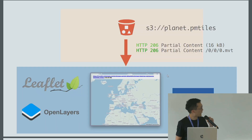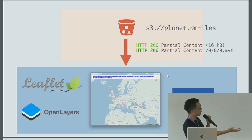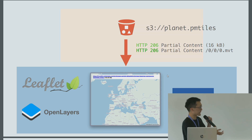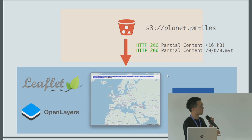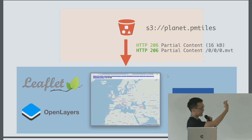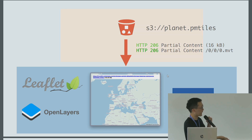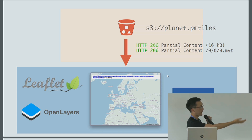As a diagram for how this works: on the top is your PMTiles archive on S3 as a single file. When you access a single tile in the web browser through a client — plugins exist for OpenLayers, MapLibre GL, or Leaflet — when you ask for a single square tile, that will correspond to a range request in this archive, returning only that small chunk of the entire file. This is the baseline mode for how to use PMTiles. The architecture is very simple: there's only an object store, a single file, and a client.